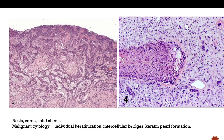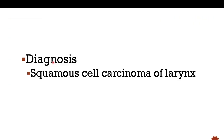In a well-differentiated tumor of this kind, you have individualized keratinization — pinkish pigments within the cytoplasm. You can also see intercellular bridges between cells, and keratin pearl formation. The intercellular bridges show pinkish cytoplasm extending between cells like starfish legs. The keratin pearl formation is visible, and this is a typical well-differentiated squamous cell carcinoma of the larynx.